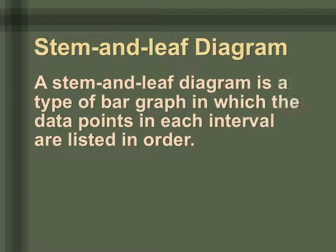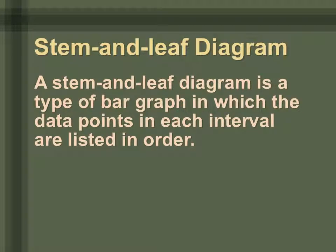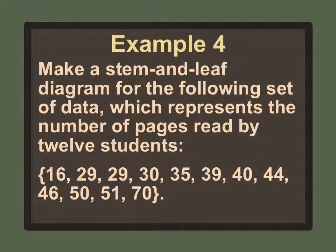Now we're going to learn what a stem and leaf diagram is. It is a type of bar graph where data points in each interval are listed in order. The intervals are usually by tens. The stem part of the diagram represents the tens place. For our data ranging from 16 to 70, the stem values would be 1, 2, 3, 4, 5, and 7 — each written only once.